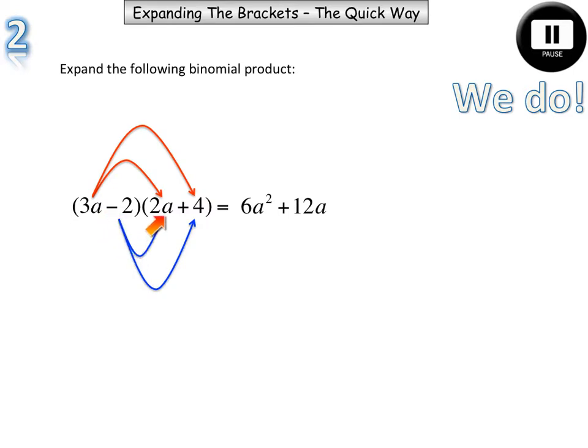And negative 2 times positive 2a will give us something. And negative 2 times positive 4. Remember we're multiplying. So that gives us negative 4a and that gives us negative 8.